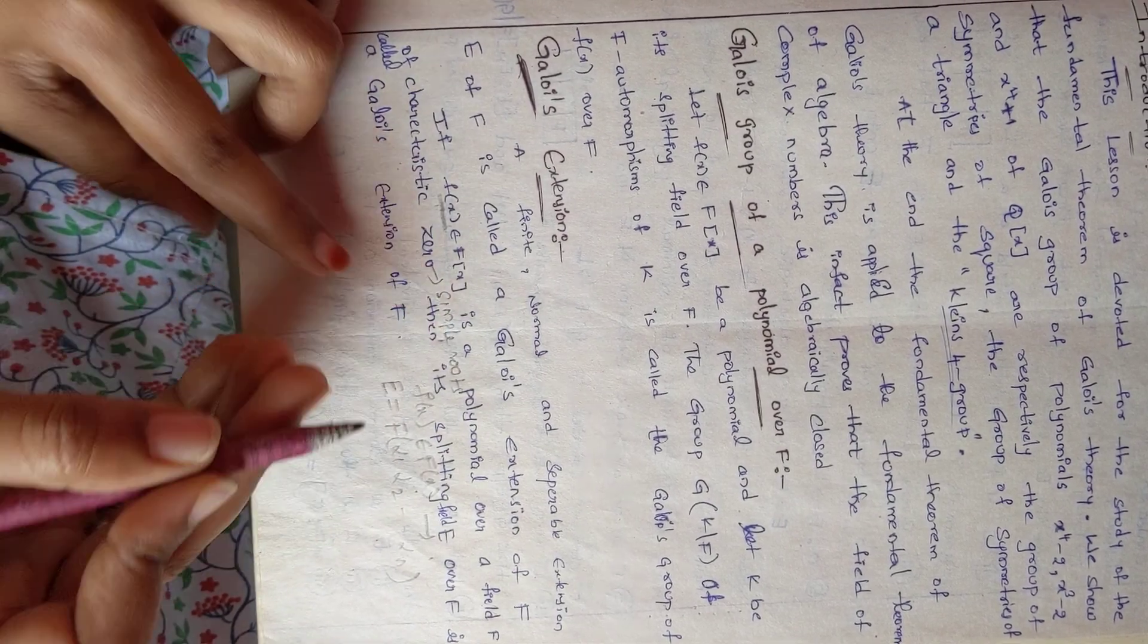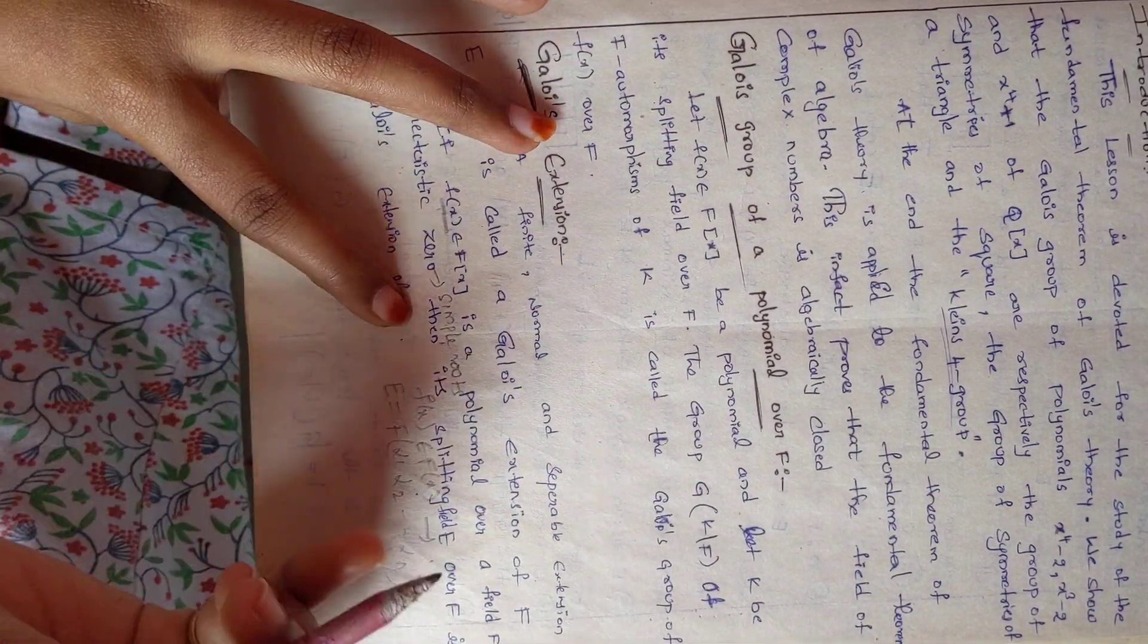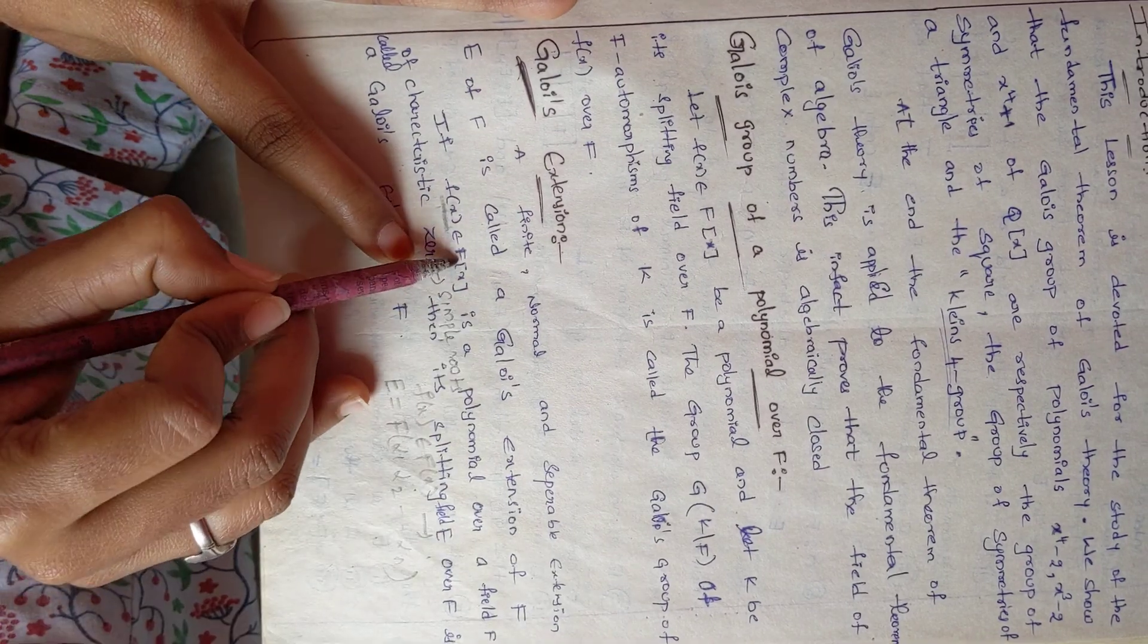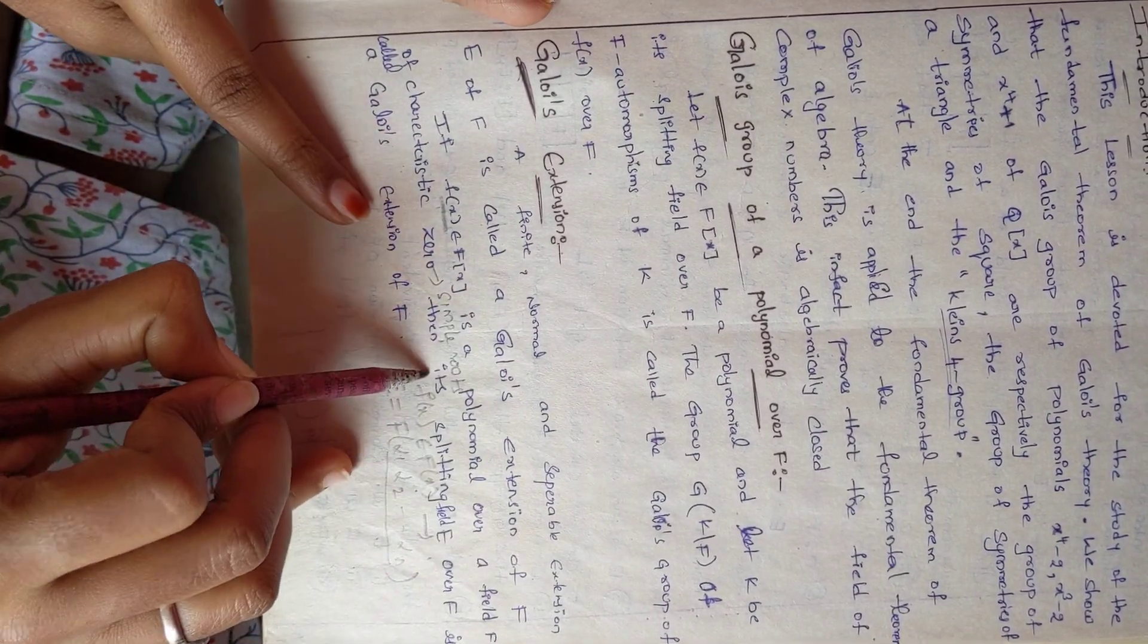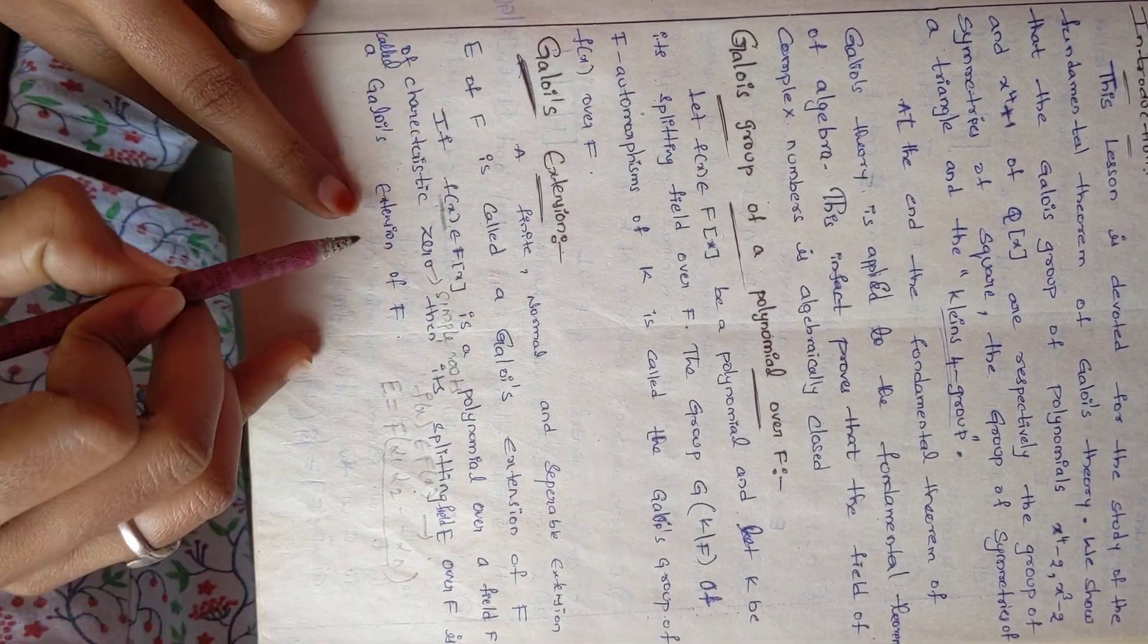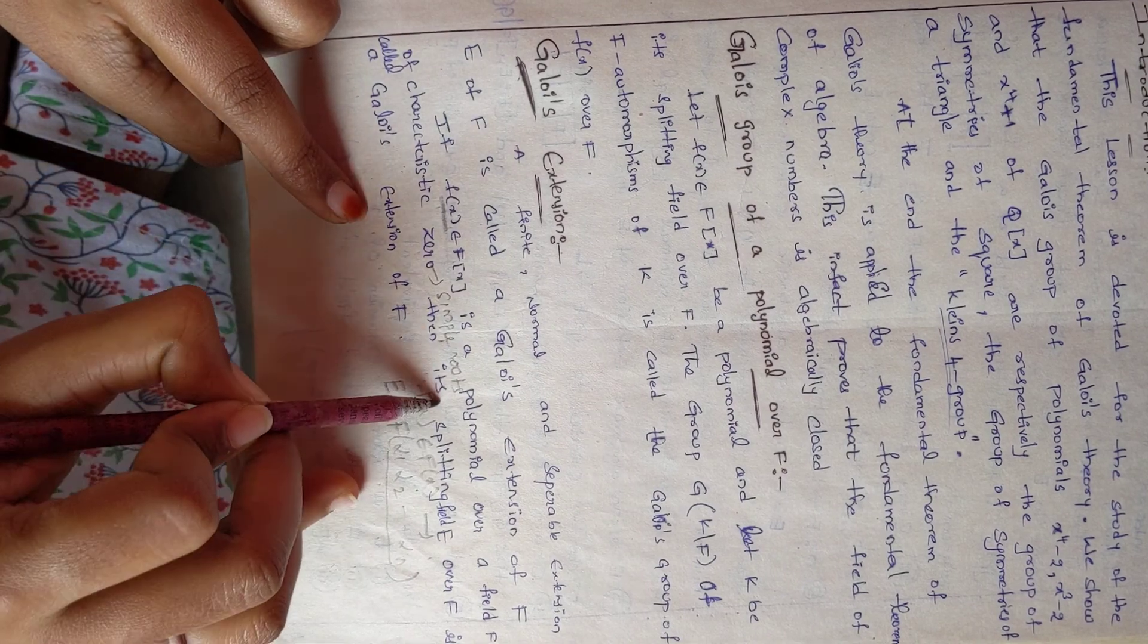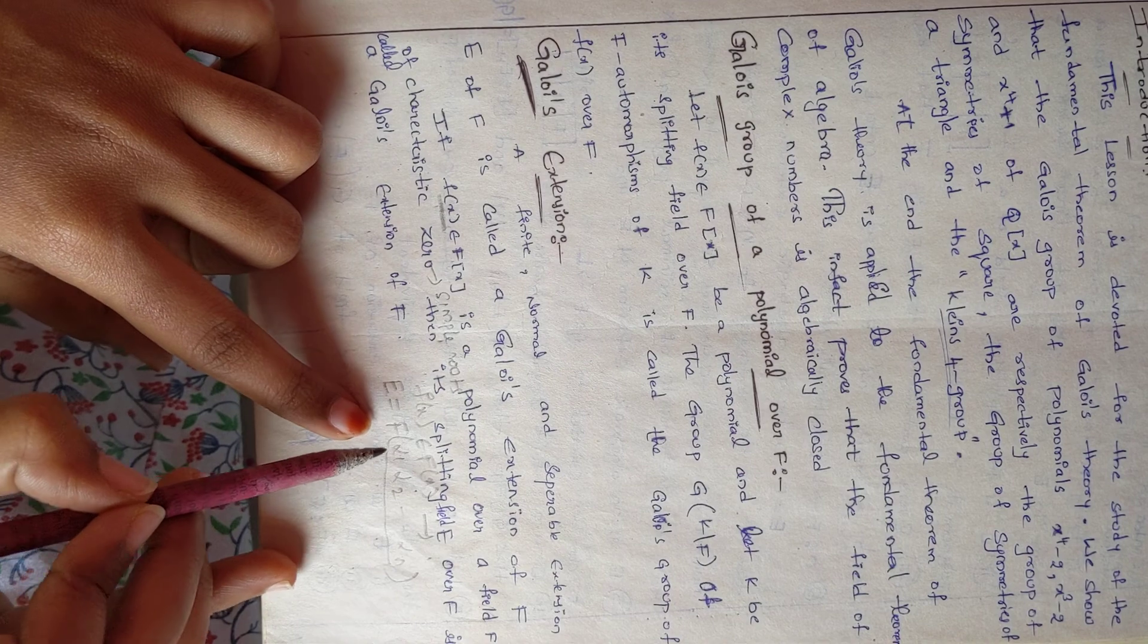This splitting field E over F is called Galois extension. So Galois extension of value, this is a splitting field and splitting field exists.